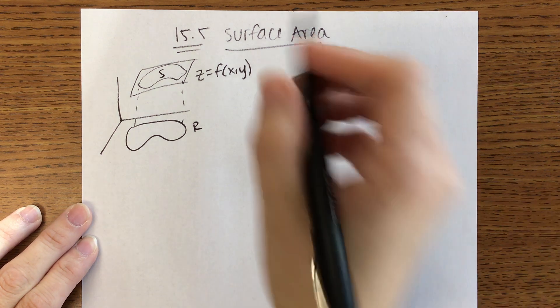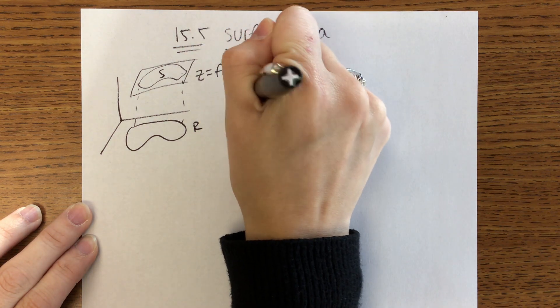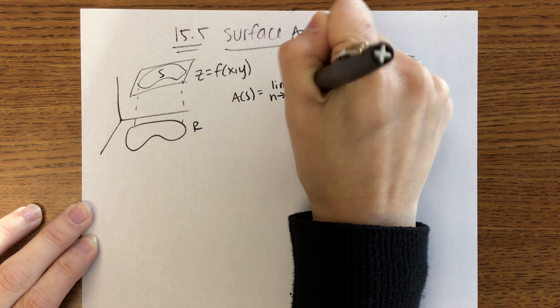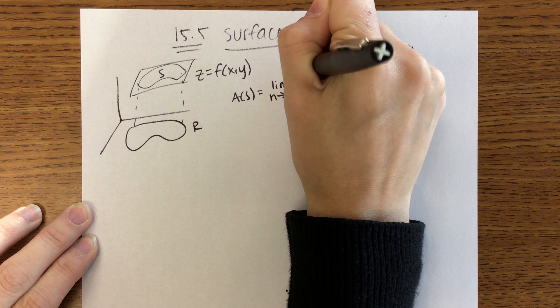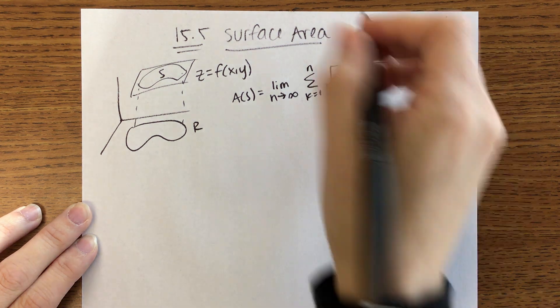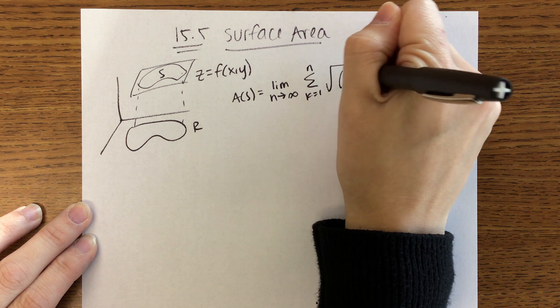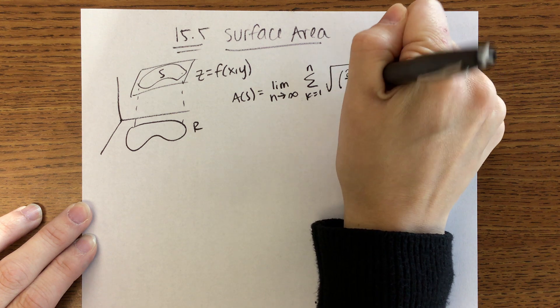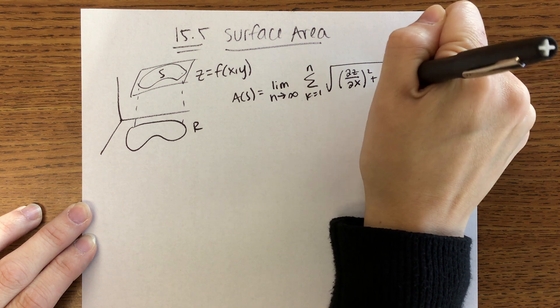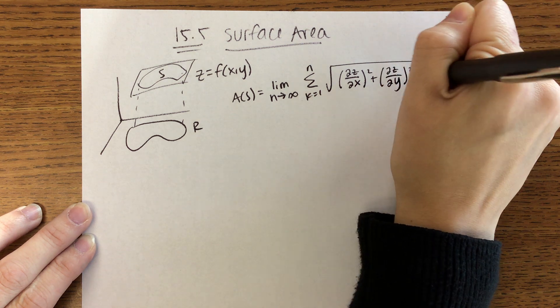Area of S is going to be the limit as N goes to infinity of the sum of K equals 1 to N, square root of the first partial of Z with respect to X squared, plus the first partial of Z with respect to Y squared, plus 1 delta A.